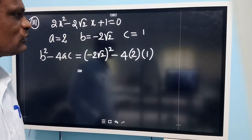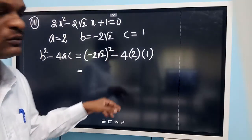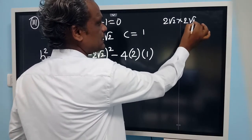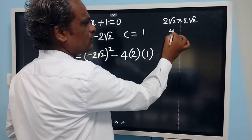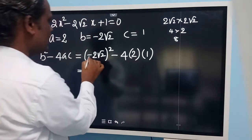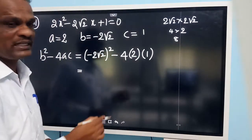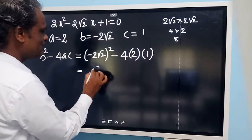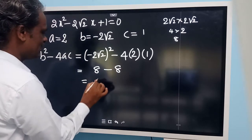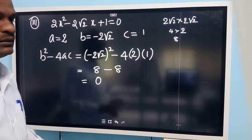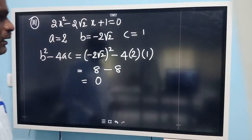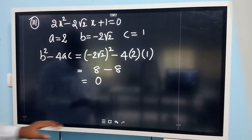Simplifying: minus 2 root 2 all squared means 2 root 2 times 2 root 2, which is 4 times 2 equals 8. And minus 4 into 2 into 1 equals 8. So we get 8 minus 8 equals 0. Therefore b squared minus 4ac is equal to 0.